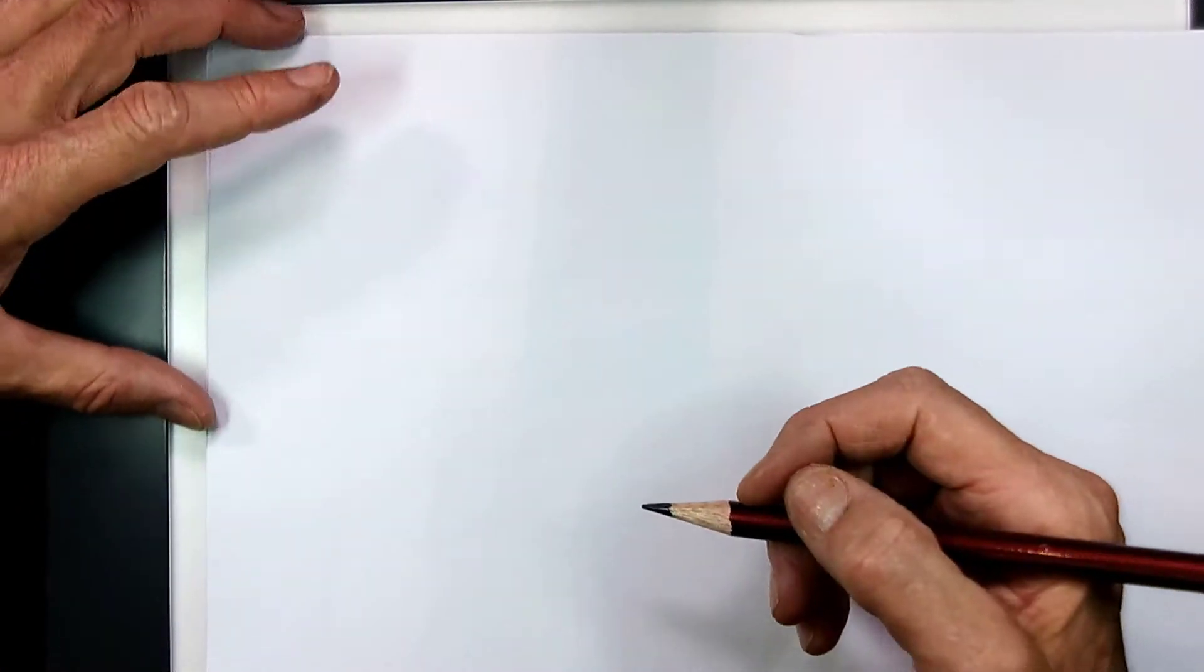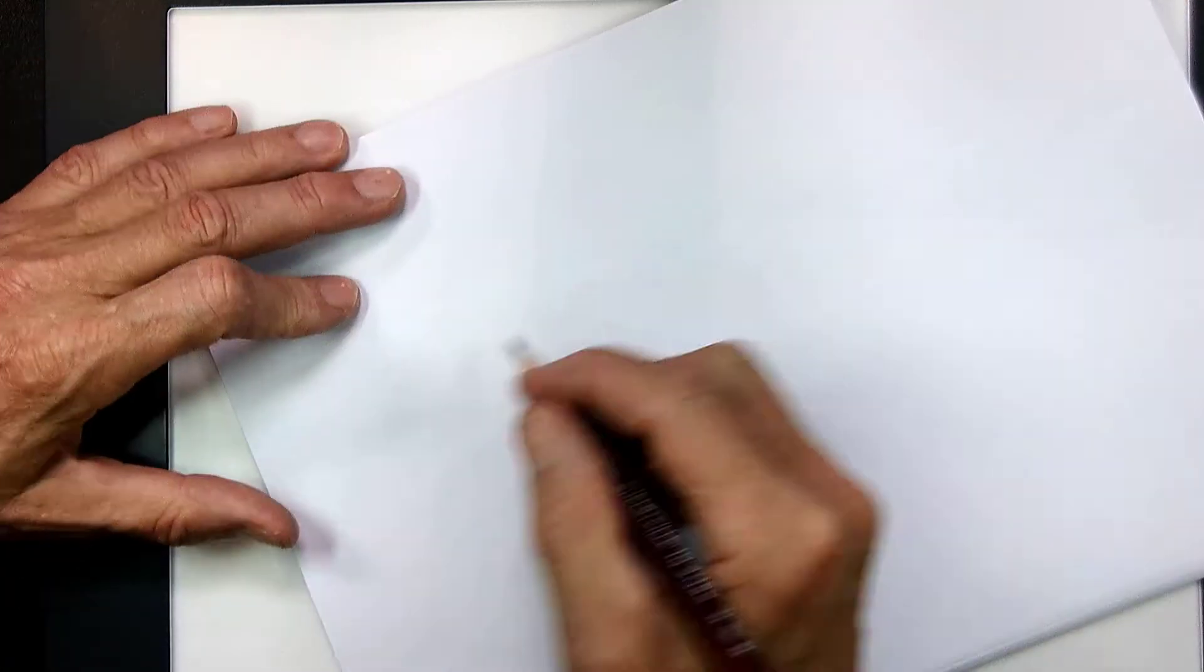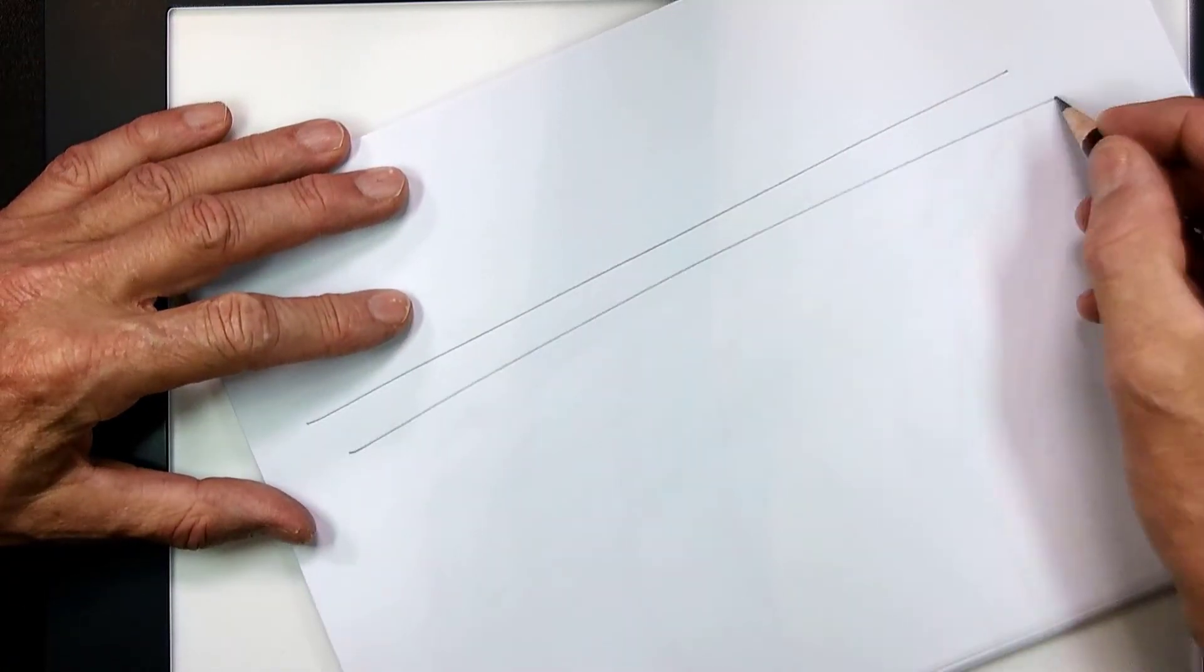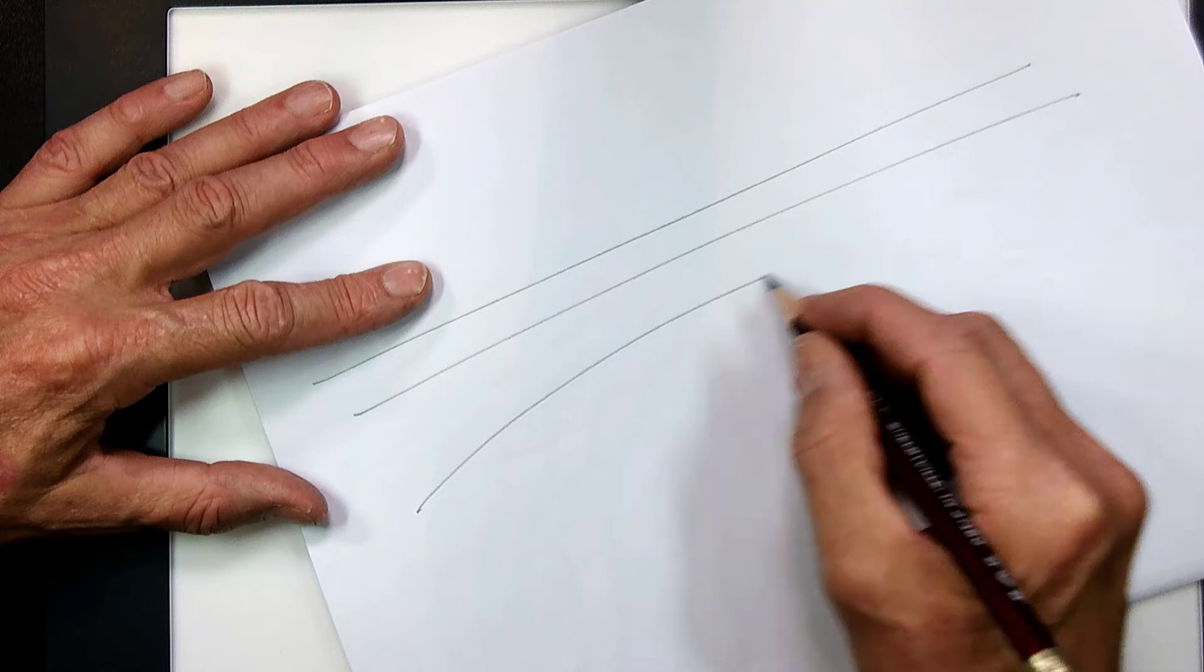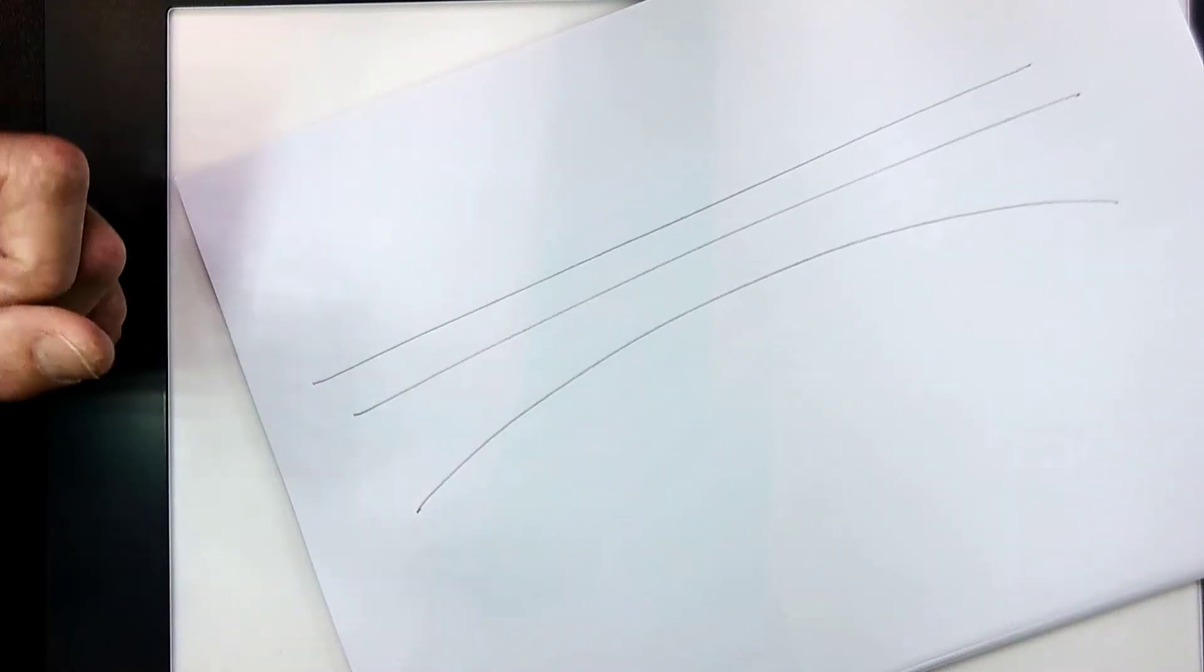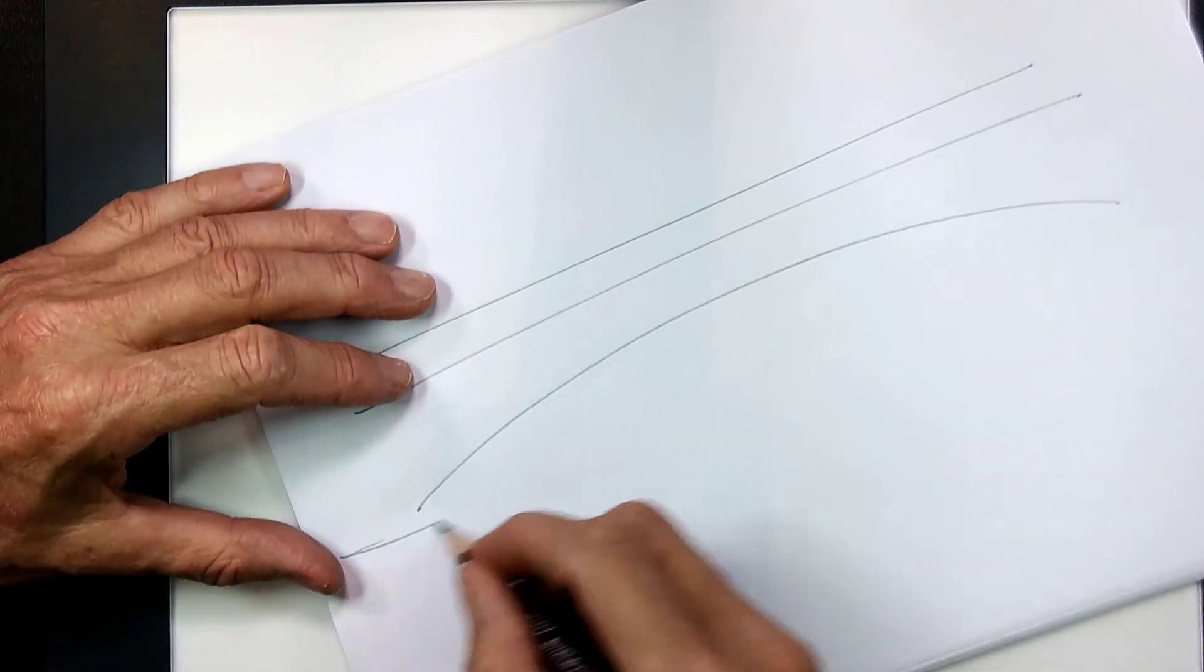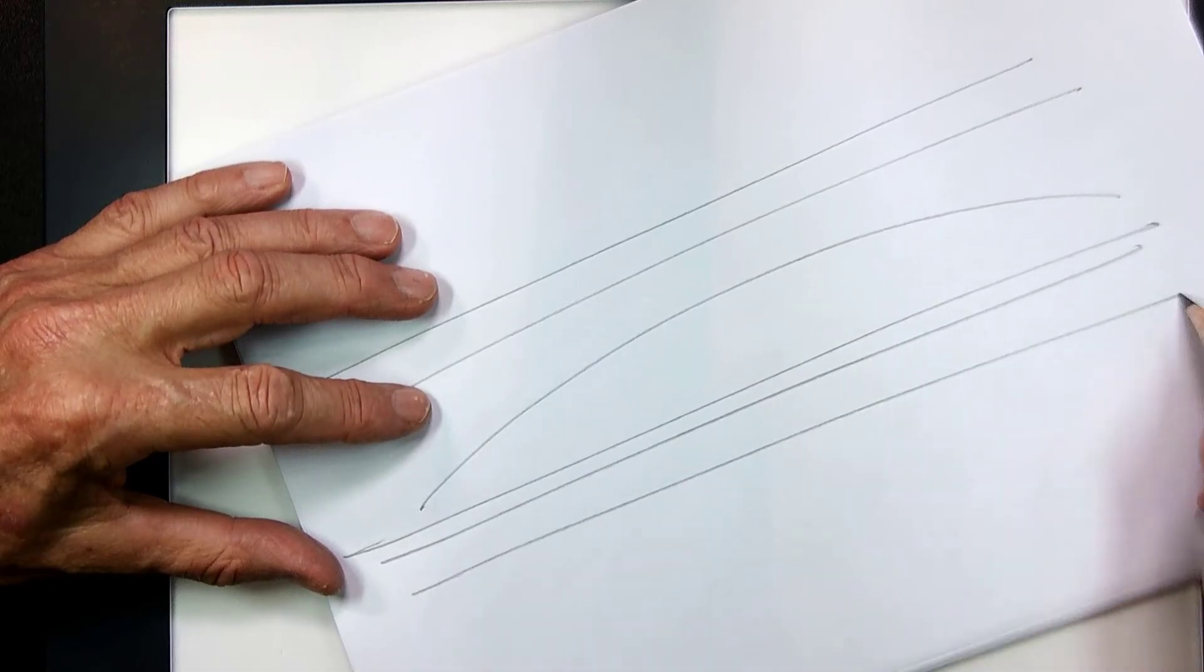So when you draw parallel straight lines, what you do is you keep your upper extremity loose, flexed, and draw like this. Now, if you see your lines kind of going like this, that's probably because your shoulder is too tight. Loosen that shoulder, use all the degrees of freedom in that shoulder so that you can draw straight lines like this.